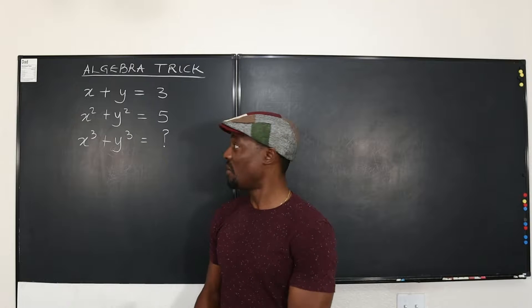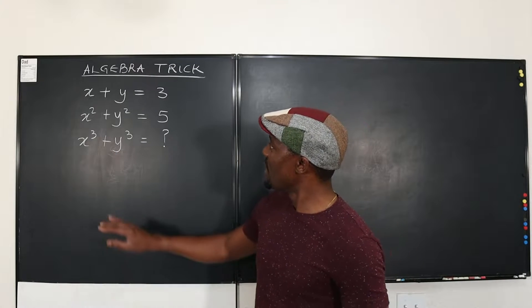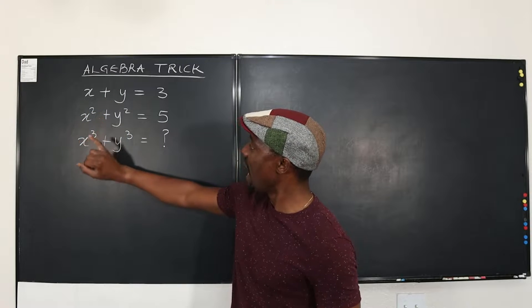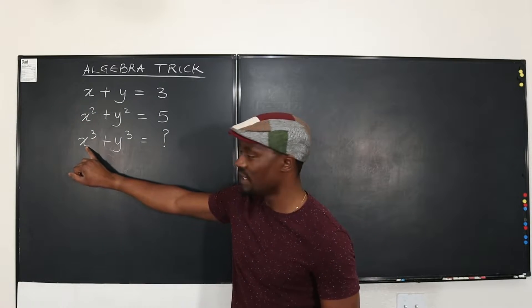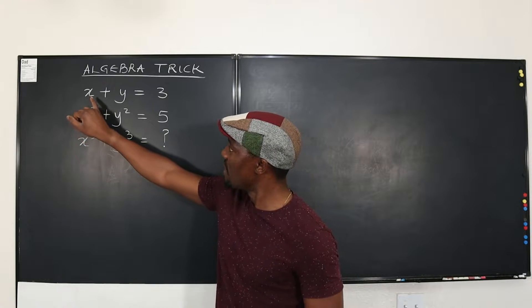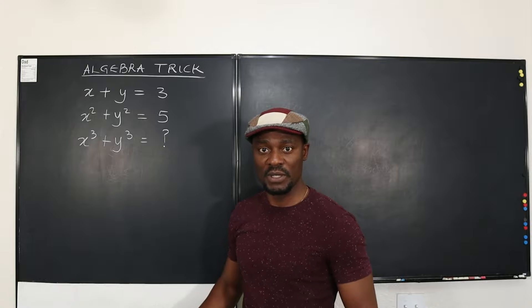What should you do whenever you get problems like this? All you have to do is ask yourself, I know this, I know this, how can I get this from what I know? Well, the only way you can get a cube from X and X squared is to multiply these two together. That's the only way.